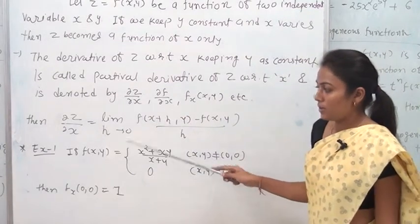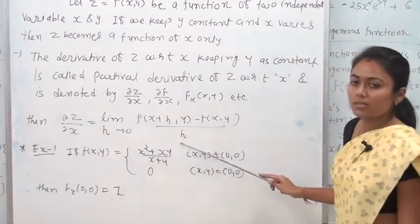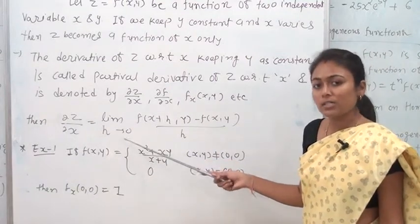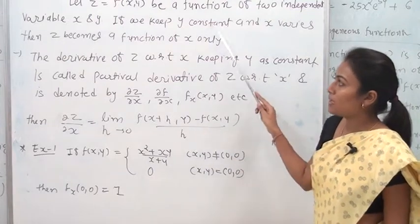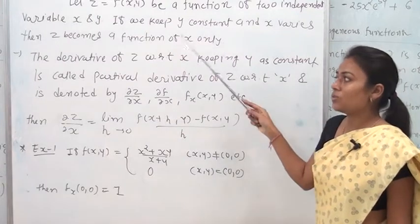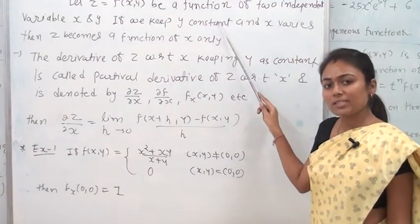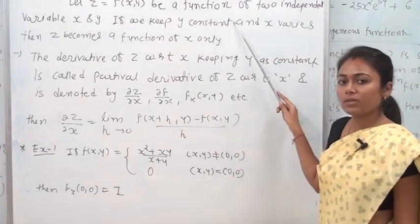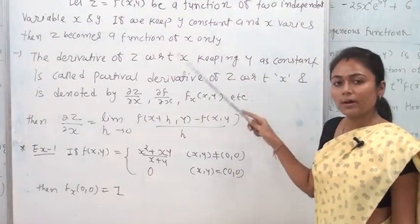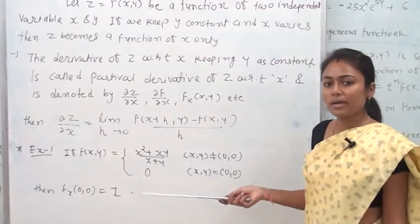If you have to find the partial derivative using the definition, you use that formula. Otherwise, to find ∂z/∂x, keep y as a constant and differentiate with respect to x. To find ∂z/∂y, keep x as a constant and differentiate with respect to y.